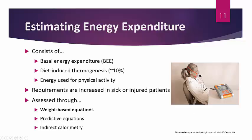Indirect calorimetry uses a patient's carbon dioxide and oxygen exchange to determine their nutritional requirements. While it is the gold standard for determining nutritional requirements, it is very expensive and not commonly done due to cost and availability. Therefore, weight-based equations or predictive equations are more commonly used.